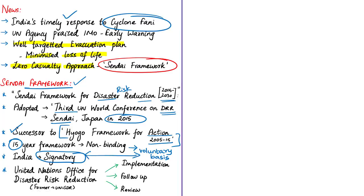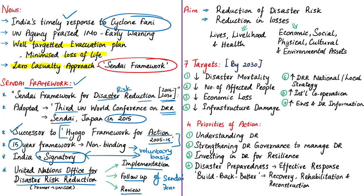India has made efforts to contribute to the realization of global targets by improving the entire disaster management cycle, following Sendai Framework recommendations and adopting globally accepted best practices. The United Nations Office for Disaster Risk Reduction is responsible for implementation, follow-up and review of the framework. This framework aims to achieve substantial reduction of disaster risk and losses in lives, livelihood, health, and economic, physical, social, cultural and environmental assets of persons, businesses, communities and countries over 15 years.